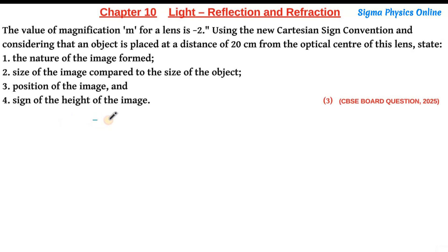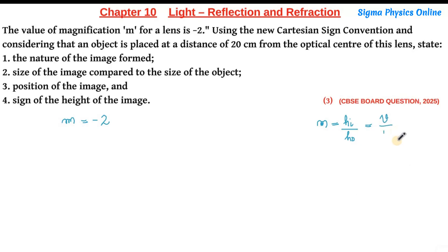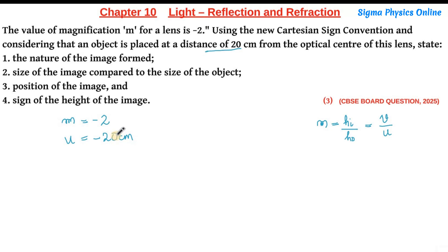Magnification is given by the ratio of the height of the image to the height of the object, which is also equal to the ratio of the image distance to the object distance. The magnification value of this lens is minus 2. The object is placed at a distance of 20 centimeters from the optical center, so the object distance u is given as minus 20 centimeters.